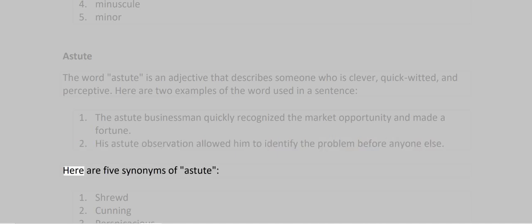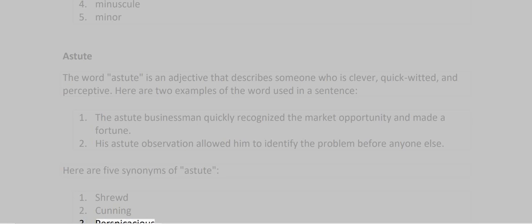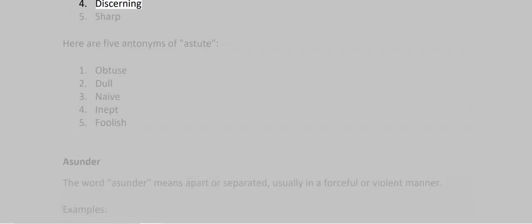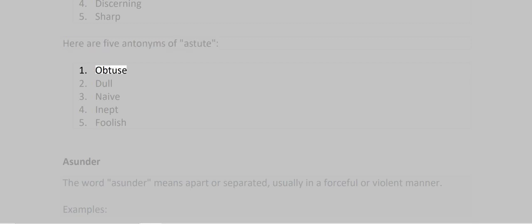Synonyms of astute: 1. Shrewd 2. Cunning 3. Perspicacious 4. Discerning 5. Sharp. Antonyms of astute: 1. Obtuse 2. Dull 3. Naive 4. Inept 5. Foolish.